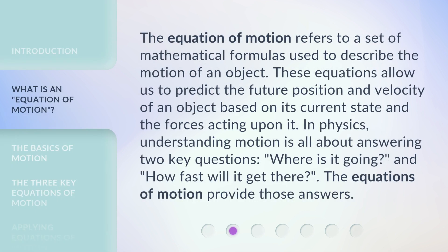The equation of motion refers to a set of mathematical formulas used to describe the motion of an object. These equations allow us to predict the future position and velocity of an object based on its current state and the forces acting upon it. In physics, understanding motion is all about answering two key questions: Where is it going? And how fast will it get there? The equations of motion provide those answers.